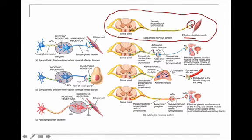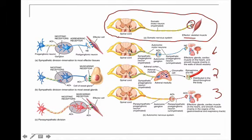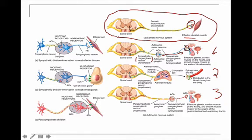When we come to the autonomic nervous system, which includes the sympathetic and parasympathetic divisions, we can label them one, two, and three. In the sympathetic division, the preganglionic neuron is short and myelinated. Then there is the ganglion, and the neurotransmitter for this preganglionic neuron is acetylcholine. The postganglionic neuron is unmyelinated, and the neurotransmitter at the effector is norepinephrine.